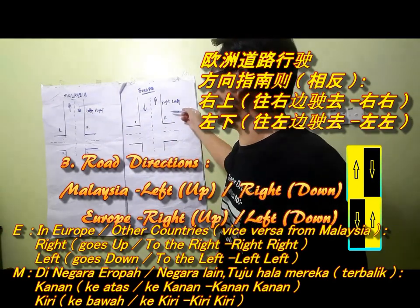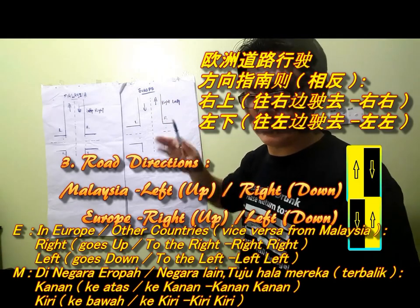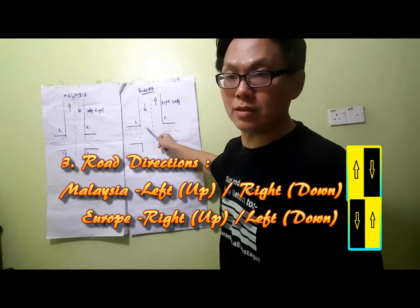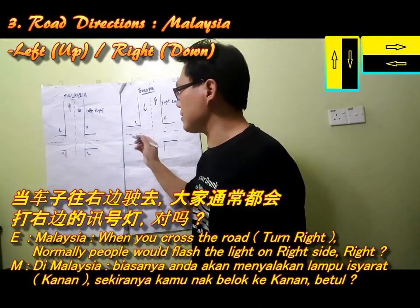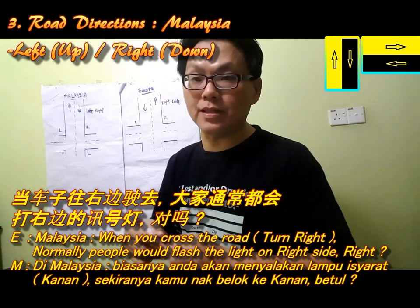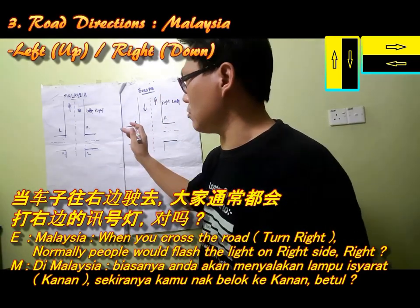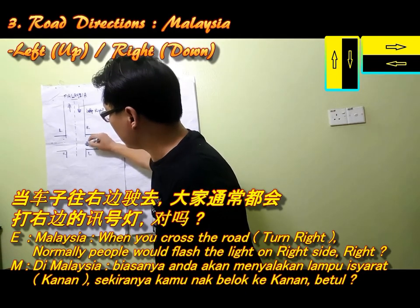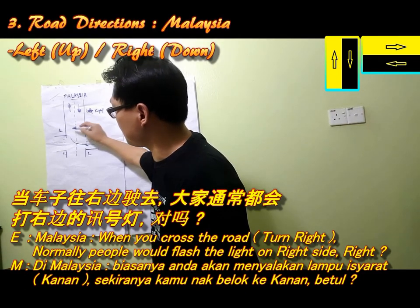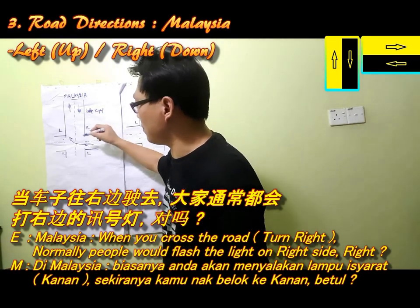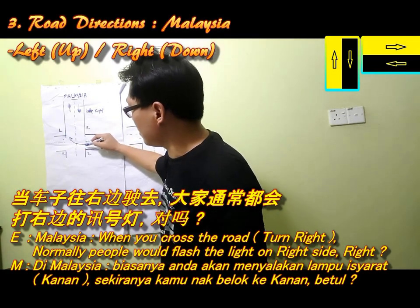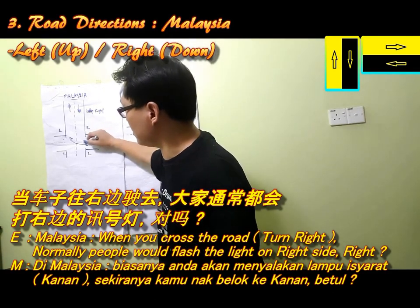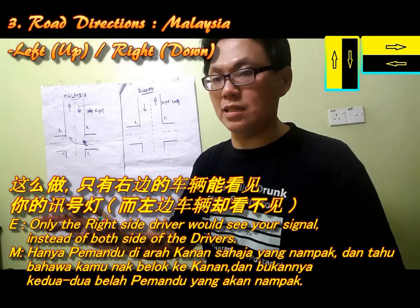Europe's driving direction is vice versa — it goes up to the right and down to the left. My point is, using the Malaysian driving direction as an example: if one person wants to cross the road, normally we will signal on the right hand side. But actually, on the right hand side, people will not see it from both directions.